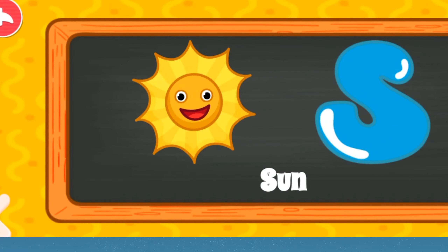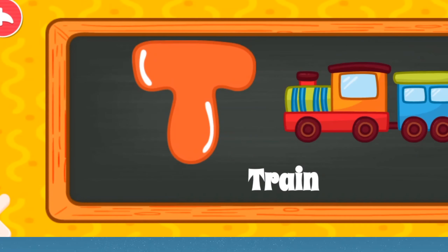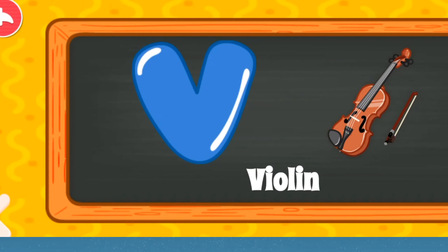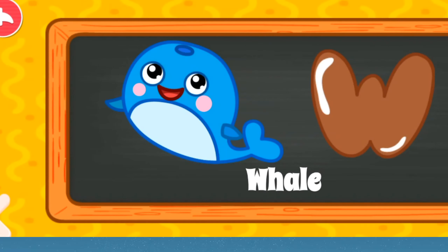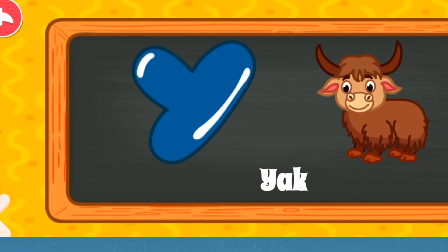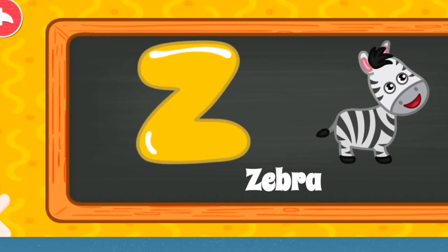S for Sun, T for Train, U for Umbrella, V for Violin, W for Whale, X for Xylophone, Y for Yacht, Z for Zebra.